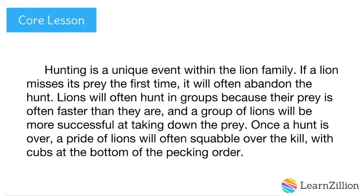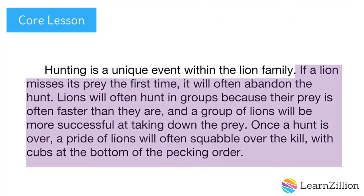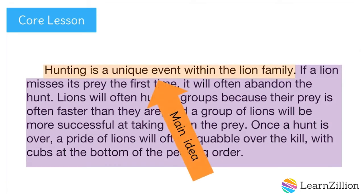Let's see how you did. Since there are many points about how lions hunt in this paragraph, I think the main idea is the first sentence. This is a general sentence that tells us this whole paragraph will be about hunting. We will want to say something about hunting in our introduction.